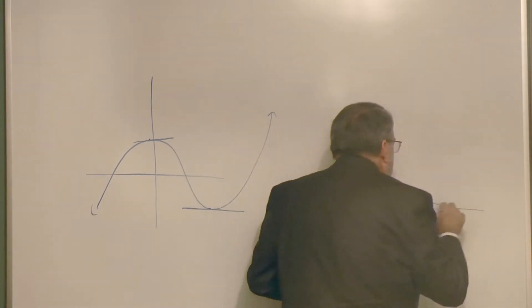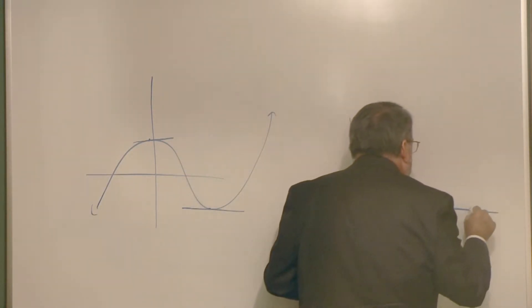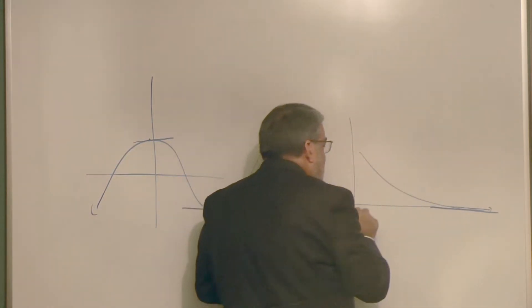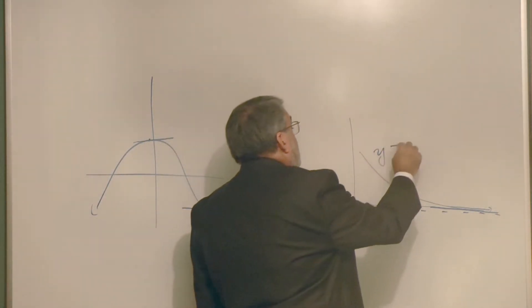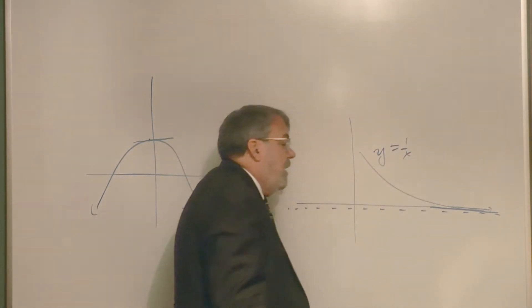It comes down and it has a horizontal asymptote. So in other words, it never quite touches, in this case never quite touches the x-axis. So this could be y equal to one over x.